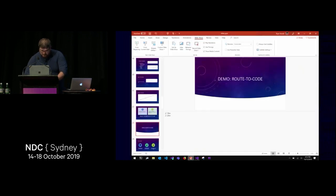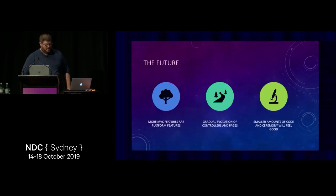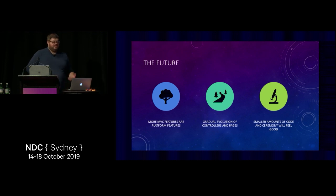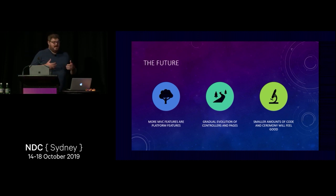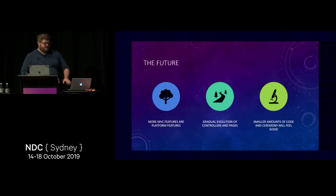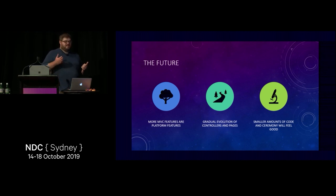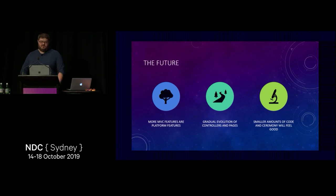There's a future where we're giving you more options here — something like this plus taking model binding out of MVC and making it separate, taking formatters out of MVC and making them separate, giving you options to build these kinds of applications. The future looks like us continuing the work we started with routing, gradually and gently evolving MVC in a way you're happy to come along with, moving features down in the platform to make MVC, ASP.NET Core, SignalR, and gRPC feel more consistent and capable.